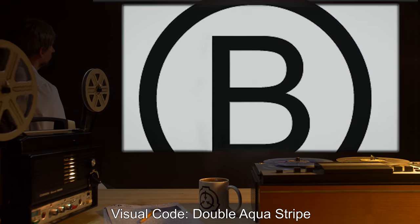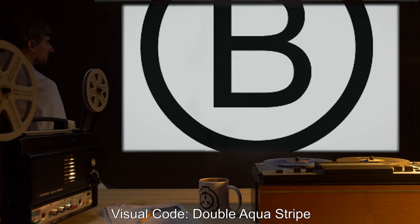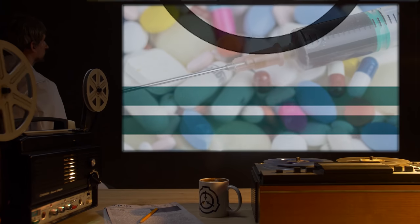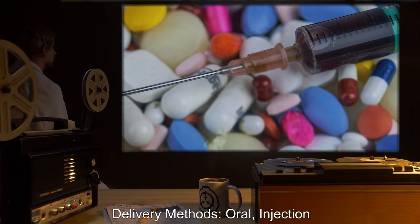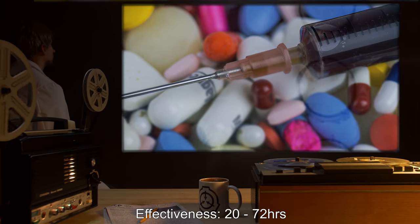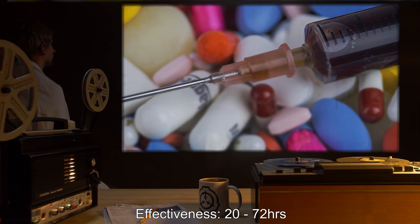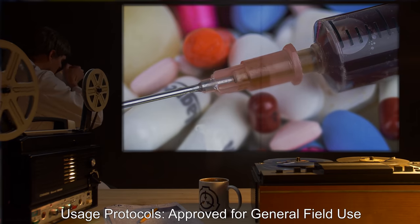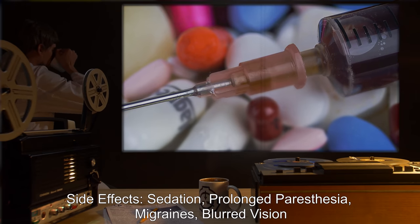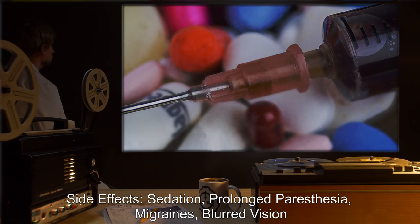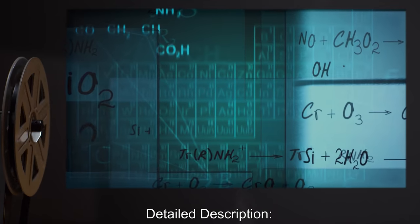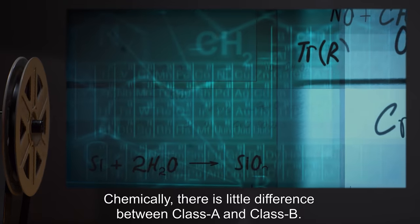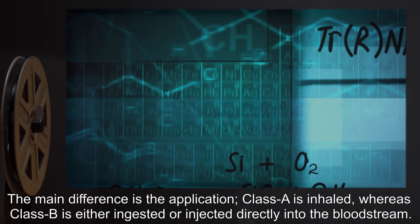Class B. Visual Code: Double Aqua Stripe. Clearance Use: Trained Level 2 and Above. Delivery Methods: Oral, Injection. Effectiveness: 20-72 Hours. Usage Protocols: Approved for General Field Use. Side Effects: Sedation, Prolonged paresthesia, Migraines, Blurred Vision. Detailed Description: Chemically, there is little difference between Class A and Class B. The main difference is the application.